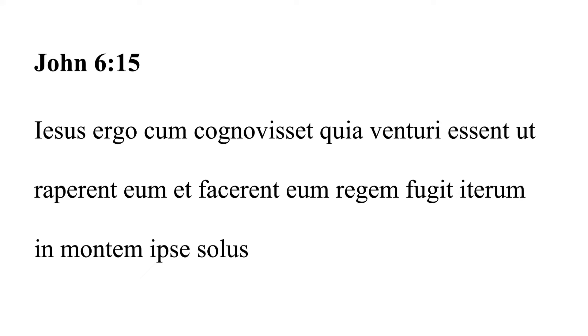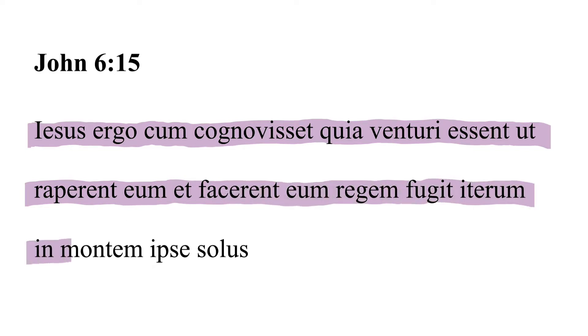John 6:15. Iesus ergo, cum cognovisset, quia venturi essent, ut raperent eum, et facerent eum regem, fugit iterum in montem ipse solus. Therefore, Jesus, when he had perceived or understood that they were going to come in order that they might take him away and make him king, withdrew again to the mountain by himself.